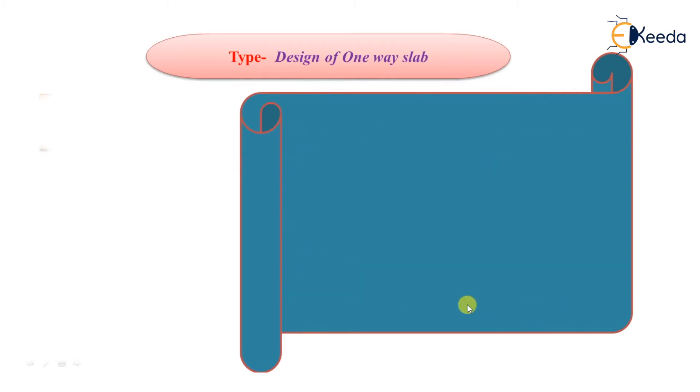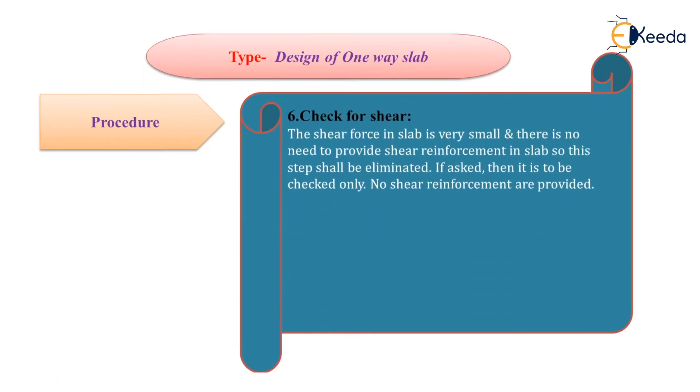Next is check for shear. The shear force in slab is very small and there is no need to provide shear reinforcement in slab, so this step shall be eliminated. If asked in the problem to check for shear, then it is to be checked only. No shear reinforcement are provided as it is impracticable.